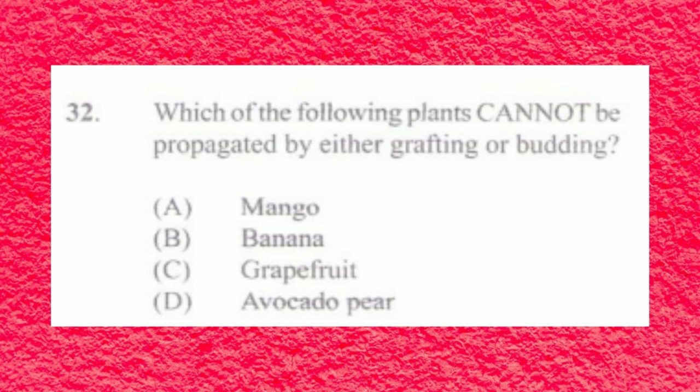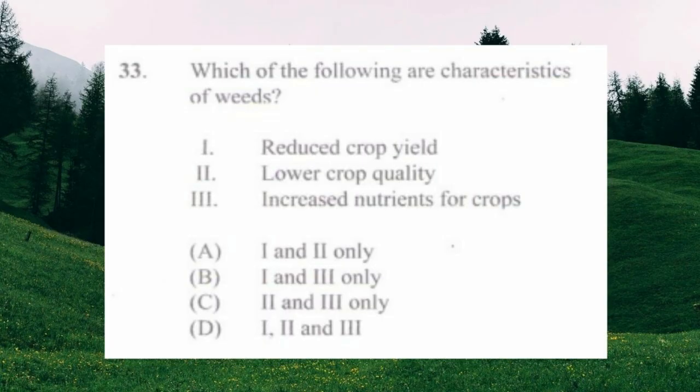Question number thirty-two: which of the following plants cannot be propagated by either grafting or budding? a) mango, b) banana, c) grapefruit, d) avocado pear. The answer is b) banana. Banana is commonly propagated by removing a sucker or by tissue culture.